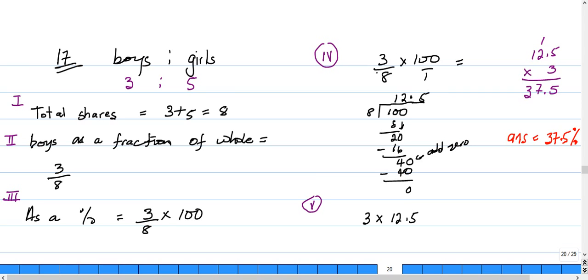Number 17 says in a class the ratio of boys to girls is three to five. What percentage of the class is boys? All right, so the boys would make up what percentage of the class? That's what we need to know.